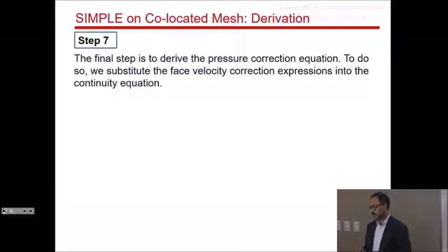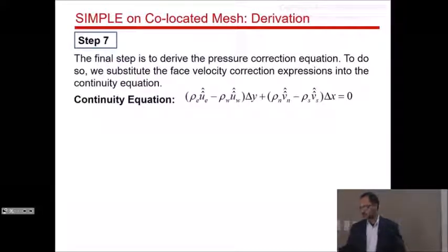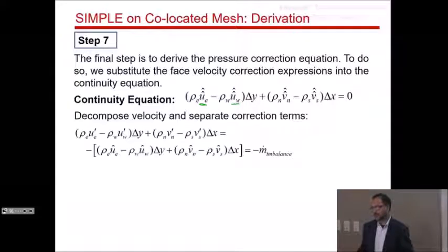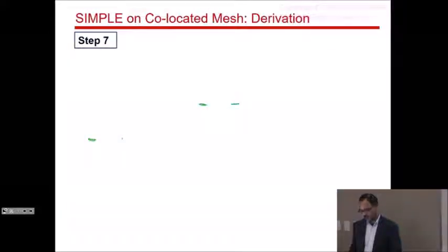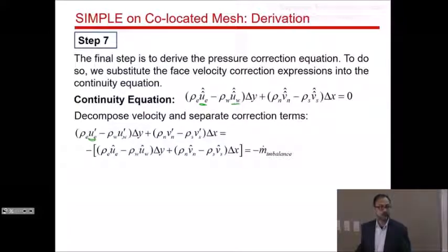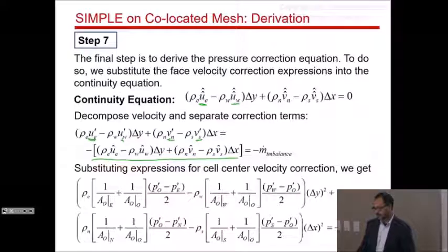The final step in the derivation is the pressure correction equation. We substitute the face velocity correction expressions into the continuity equation. The right-hand side is the mass imbalance. On a staggered mesh, face velocities were readily available as cell center velocities; here we must use the correction expressions just derived.